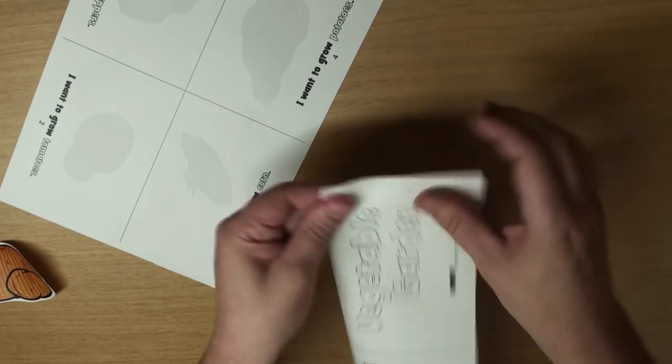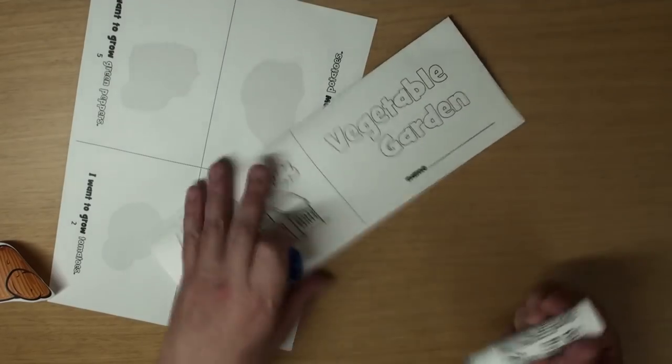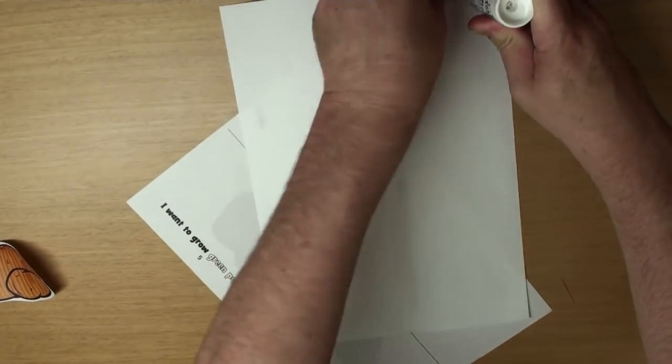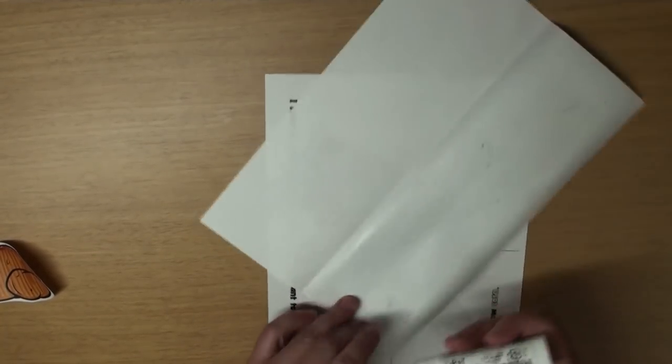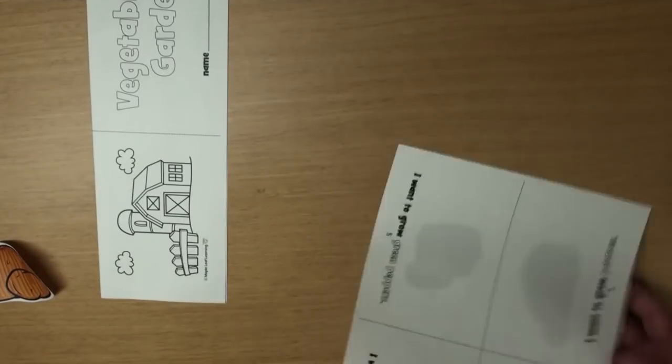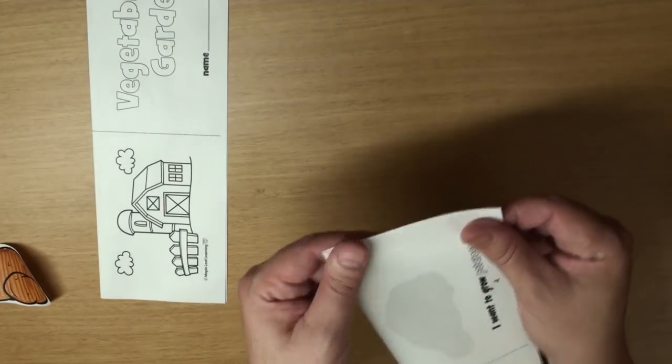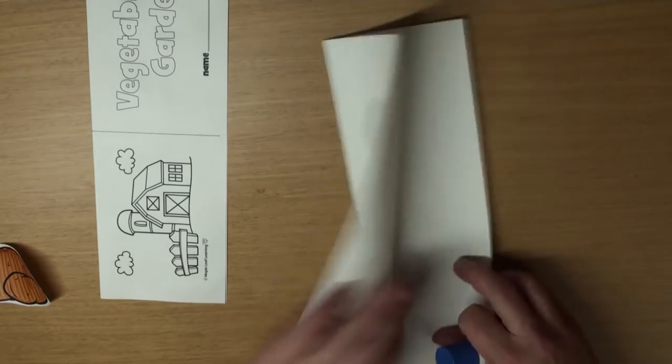Fold them nicely like this, ok? And glue them together. Make sure you put on lots of glue, ok? There's one. And do the same with the other one, ok? Fold it nicely in half.